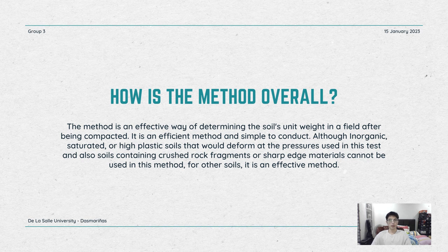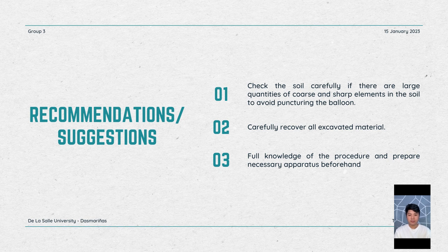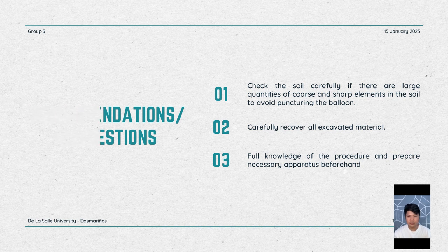In summary, the rubber balloon method is an effective way of determining the soil's unit weight in a field after compaction. It is an efficient and simple-to-conduct method. However, inorganic, saturated, or highly plastic soils that would deform under test pressure, and soils containing crushed rock fragments or sharp-edged materials, cannot be used with this method. For other soils, it is effective. As the balloon membrane may puncture during testing, it is recommended to check the soil carefully for large quantities of coarse and sharp elements. It is also recommended to carefully recover all excavated materials for accurate testing. Having memorized the procedure and preparing all apparatus beforehand will make the method more efficient. Thank you and have a good day!